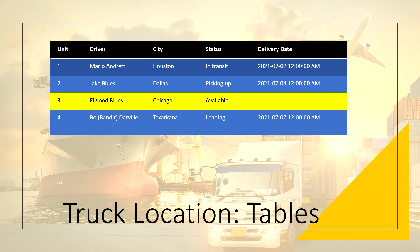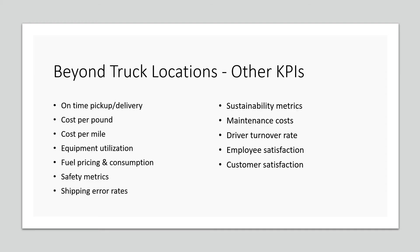You can also show the information as a table — each unit number, the driver, what city they're in, their status (in transit, available, picking up, loading), and the delivery date. Beyond just truck locations, you can use other KPIs as well: on-time pickup/delivery, cost per pound, cost per mile, fuel pricing, safety metrics, shipping error rates, sustainability, maintenance cost, driver turnover rate, employee satisfaction, and customer satisfaction.